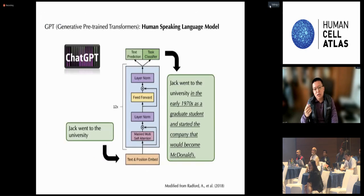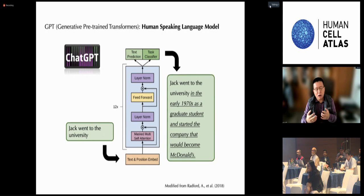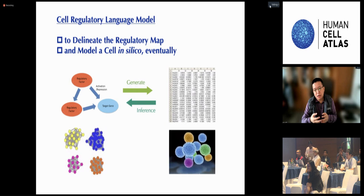Just like what ChatGPT does — ChatGPT does not keep all input texts as-is, but tries to learn the rules of human language so it can apparently understand what we say and respond accordingly. Here we are going to build a model to learn the language of cell regulation: a cell regulatory language model.